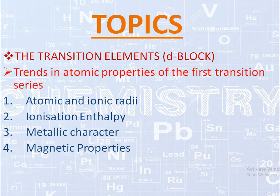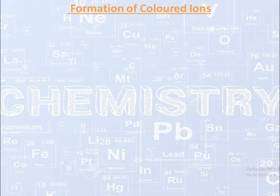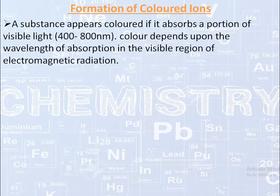Now let's see one more property, that is color — formation of colored ions. When a substance absorbs light of a particular wavelength in the visible range, then that substance shows a particular color. A substance appears colored if it absorbs a portion of visible light from 400 to 800 nanometers. Color depends upon the wavelength of absorption in the visible region of electromagnetic radiation.